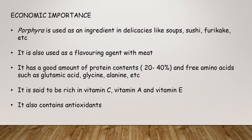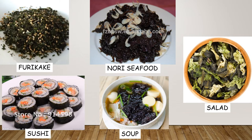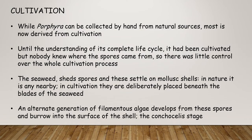Porphyra is used as an ingredient in delicacies like soup, sushi, furikake, etc. It is also used as a flavoring agent with meat. It has a good amount of protein content — about 20 to 40 percent — and free amino acids such as glutamic acid, glycine, and alanine. It is rich in vitamin C, vitamin A, and vitamin E, and also contains antioxidants. Some delicacies produced from Porphyra include furikake, nori, seafood salad, soup, and sushi.